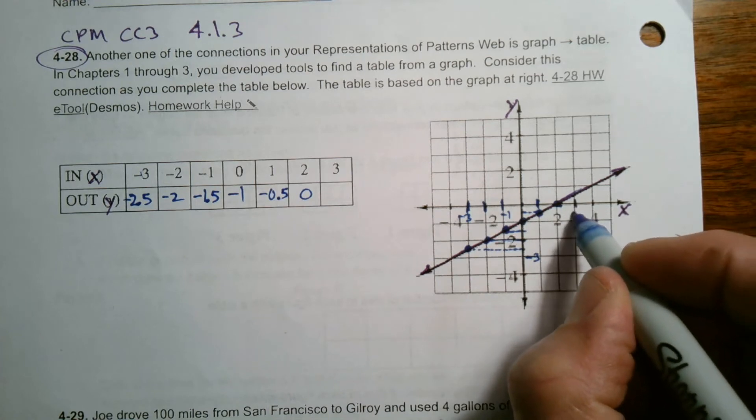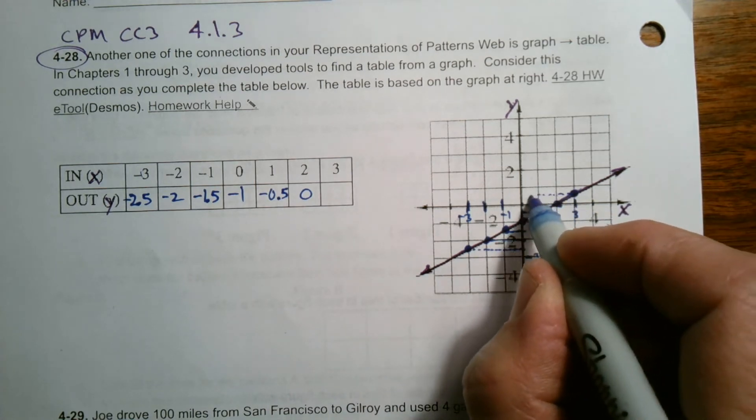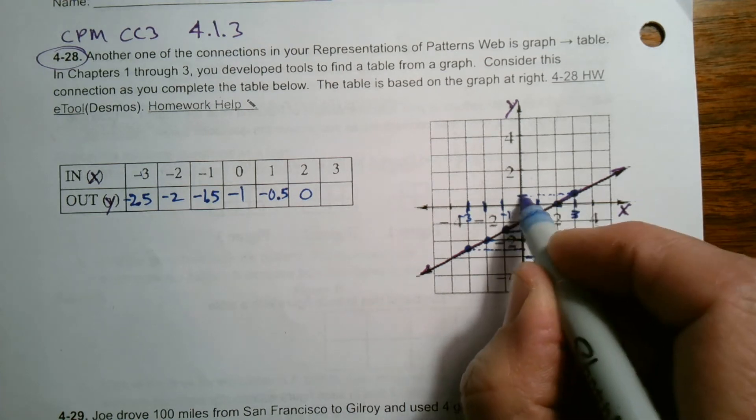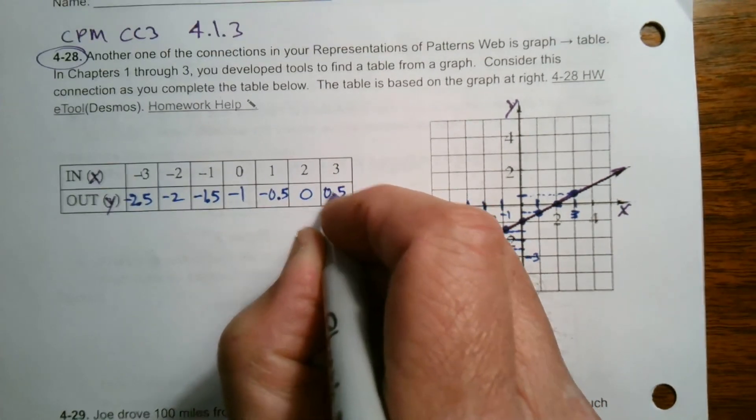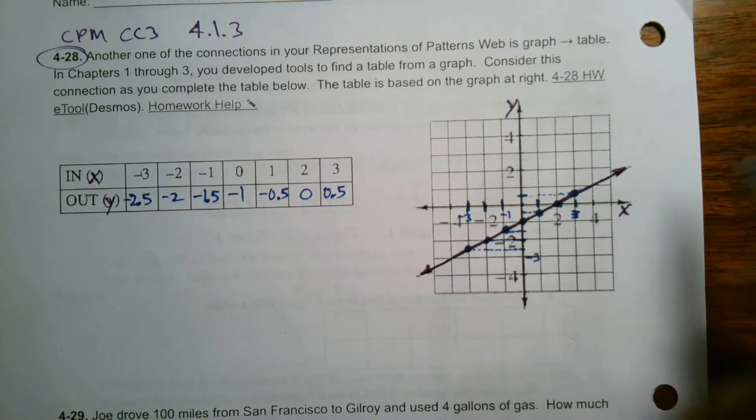Last one at three, which is right here. Where's that on the graph? If we look to see where that is on the Y value, at X equals three, Y would be looks like one half or 0.5. So that's the table based on the graph that I was given.